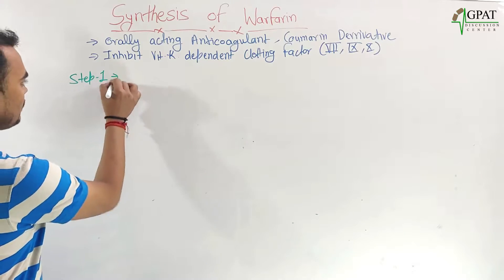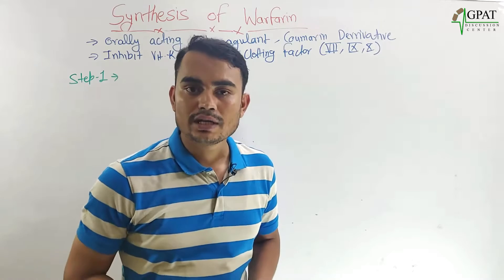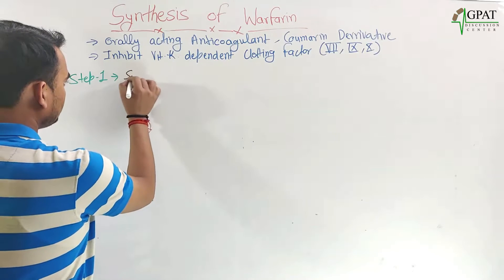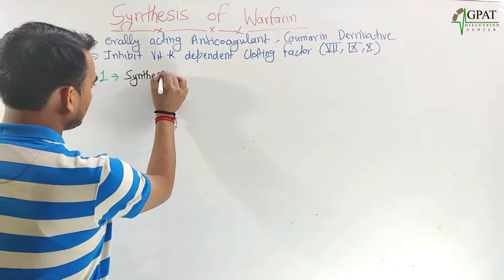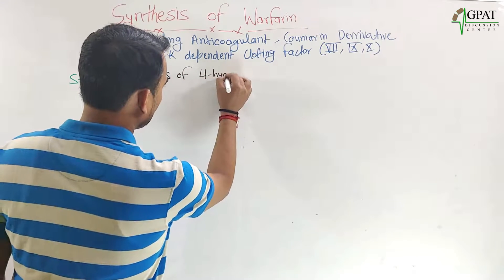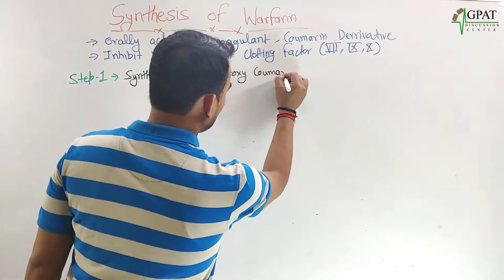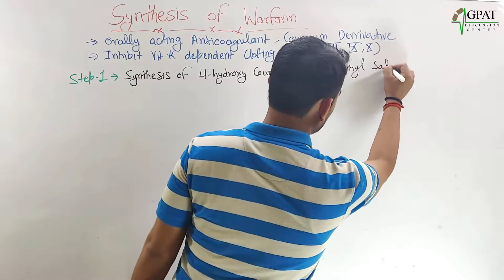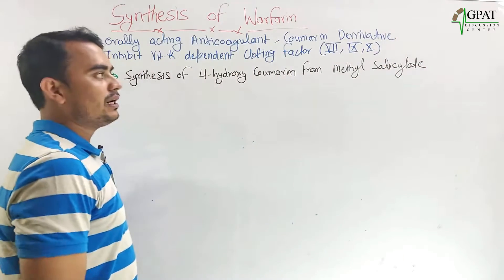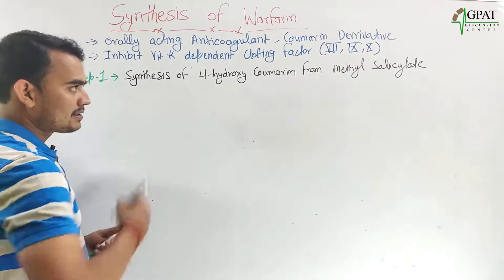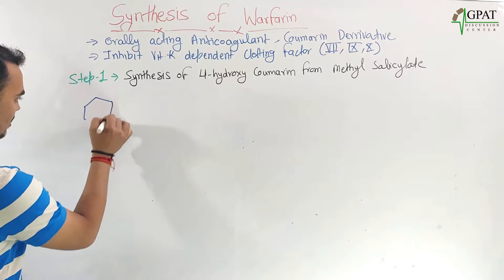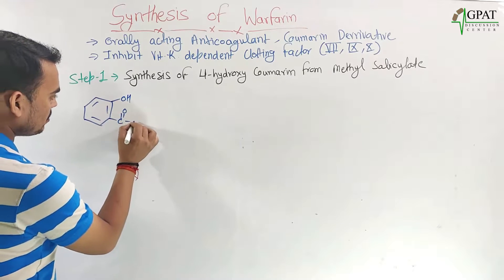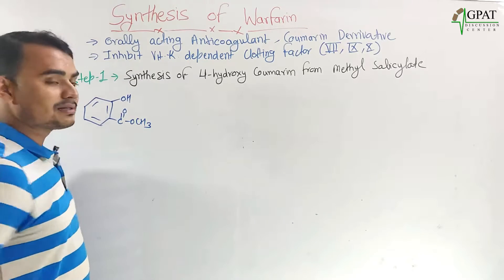Step one: synthesis of 4-hydroxycoumarin from methyl salicylate. Our starting material is methyl salicylate. Here we have methyl salicylate with an OH group, a CO group, an O, and a CH3.